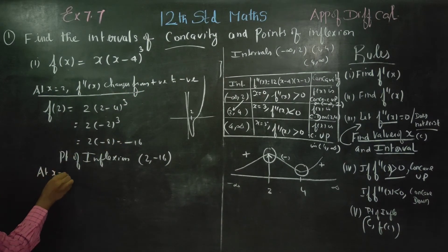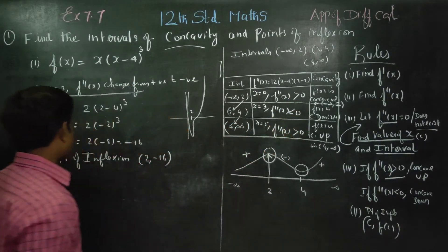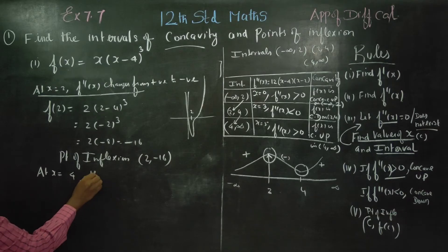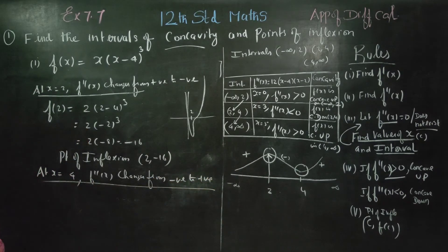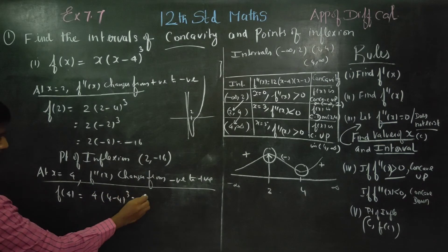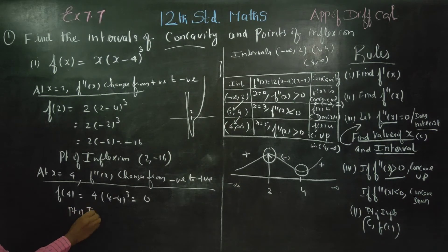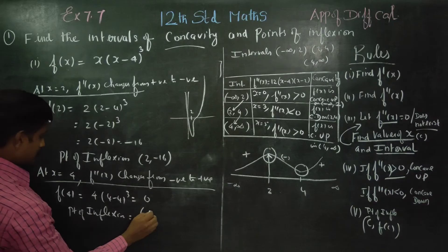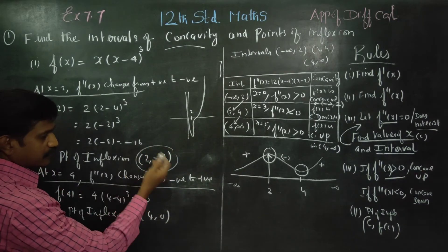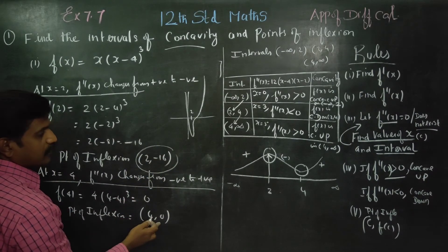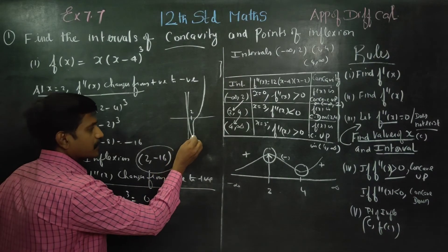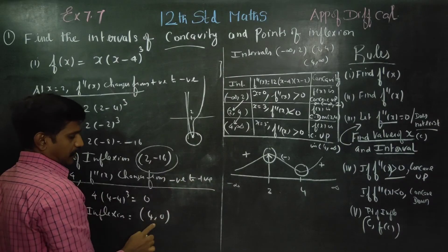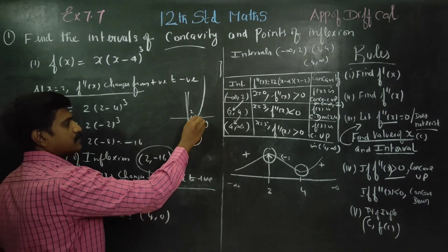At x = 4, f''(x) changes from negative to positive, so x = 4 is also a point of inflection. f(4) = 4 × (4−4)³ = 4 × 0 = 0. Therefore, the second point of inflection is (4, 0). At x = 2 the concavity changes, and at x = 4 the concavity changes again. The two points of inflection are (2, −16) and (4, 0).